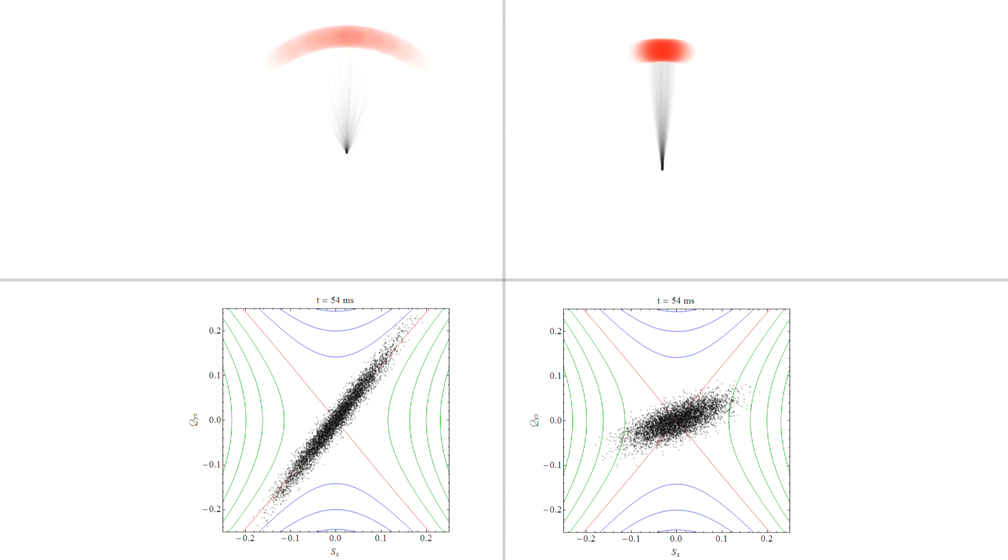But what's unique in this, or what's new in this case, is that we're doing it in a quantum domain. And it's really the Heisenberg quantum uncertainties of the atoms' orientation that we can manipulate.